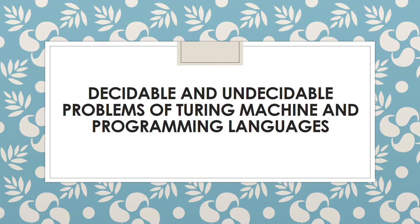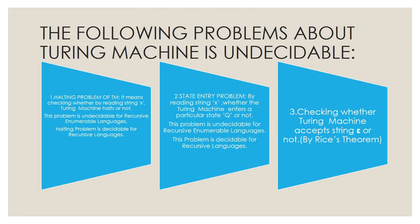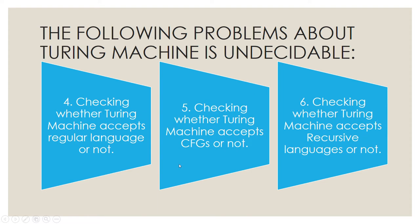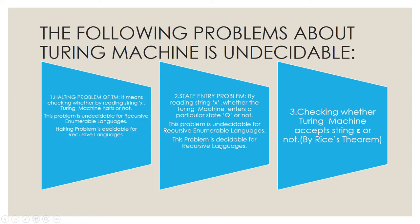The following problems about Turing machines are undecidable. First is the halting problem of Turing machine. Second is the state entry problem. Third is checking whether the Turing machine accepts string epsilon or not. The halting problem means checking whether, by reading string x, the Turing machine halts or not. This problem is undecidable for recursively enumerable languages.